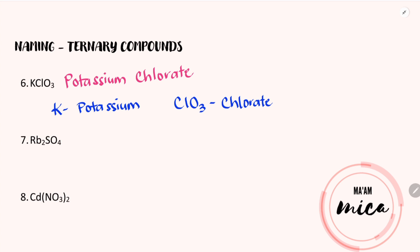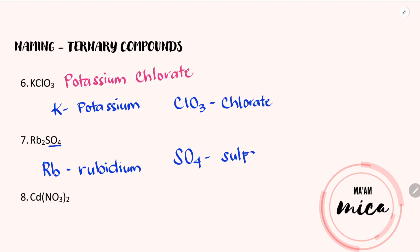For number 7, we have rubidium sulfate. Just like naming binary compounds, we will just copy the name of the first element, rubidium. Then we will just copy the name of the polyatomic ion, which is sulfate. Therefore, the chemical name is rubidium sulfate.